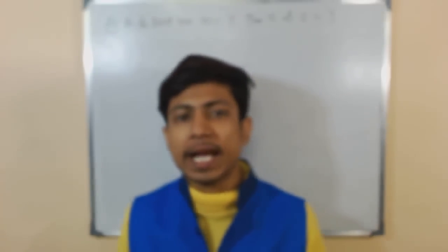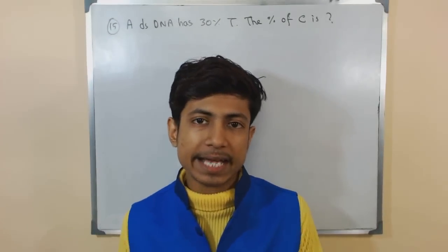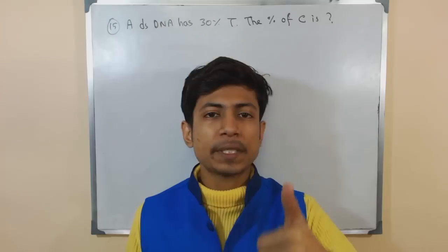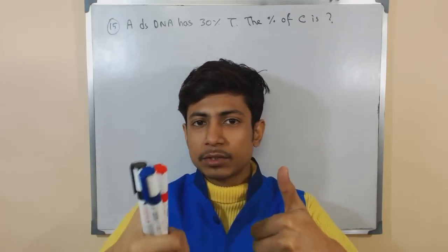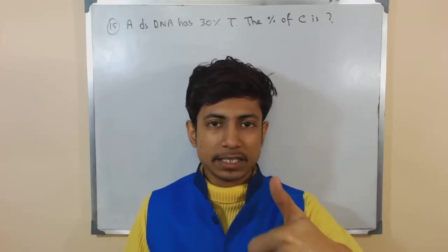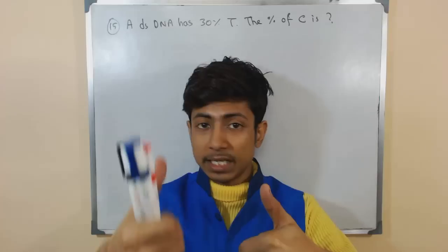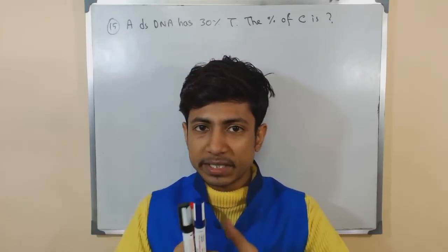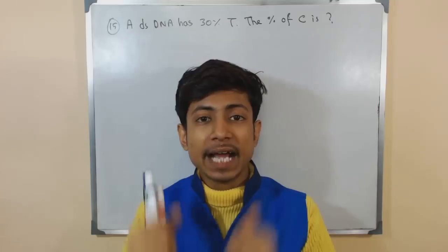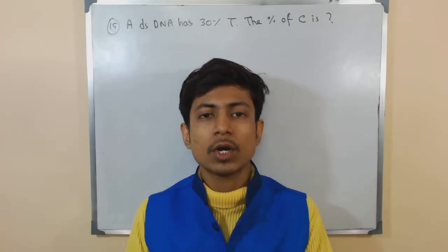We know if thymine is present in one strand, adenine will be present in the other strand. Similarly, if cytosine is present in one strand, guanine will be present in the other strand. That's the complementary nature, because adenine always pairs with thymine and guanine always pairs with cytosine. That's the rule of thumb.